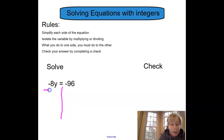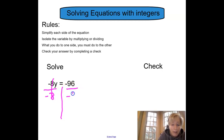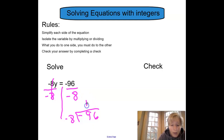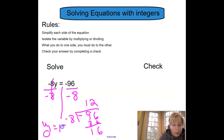We're going to come to the left side of the equation, and I'm going to use a fraction bar to show the divide sign. I'm going to divide by negative 8, because negative 8 divided by negative 8 is going to give me positive 1y — that's going to isolate the y. But if I divide by negative 8 on the left, then I have to divide by negative 8 on the right. Now I need to divide negative 96 by negative 8. A negative divided by a negative is positive. Negative 8 divides into 9 once; 8 times 1 is 8; subtract, that gives me 1; bring down the 6; 8 divides into 16 two times. So y equals positive 12.